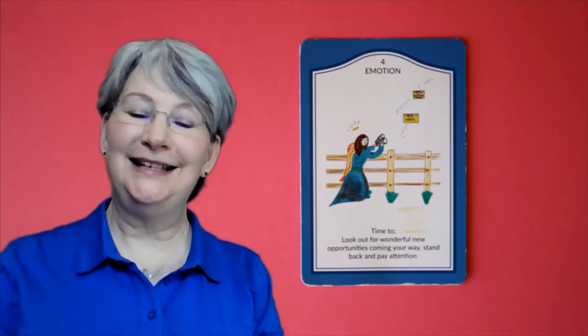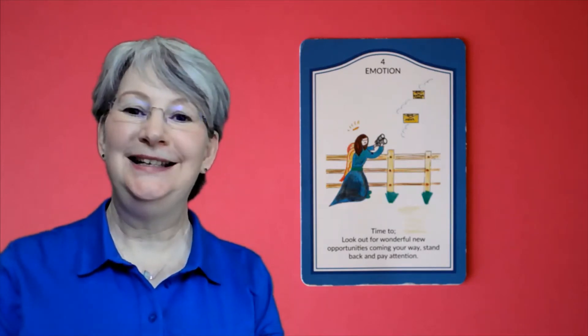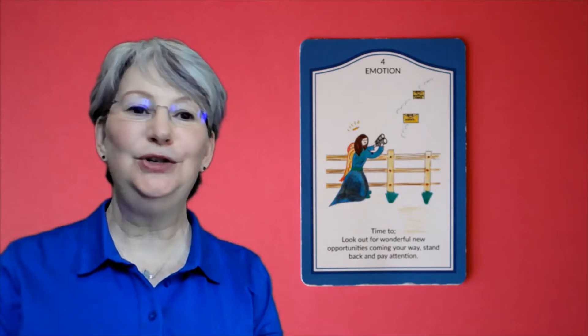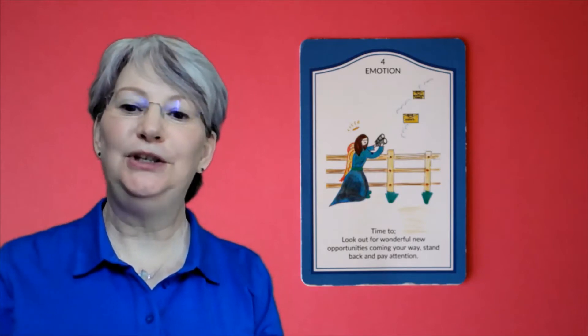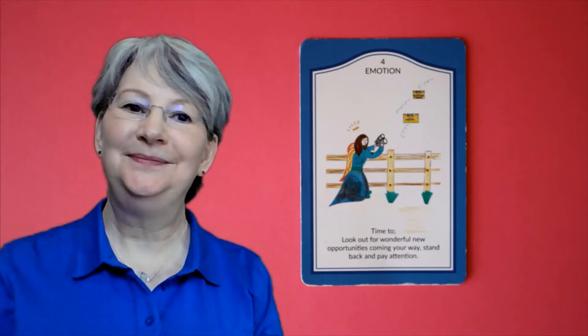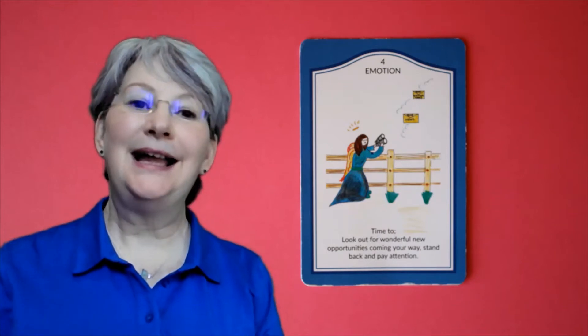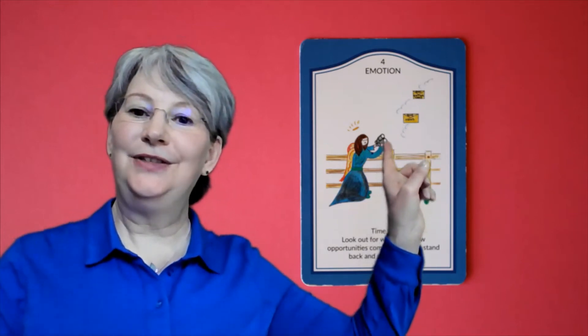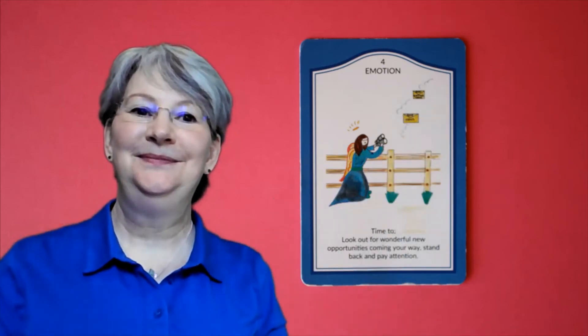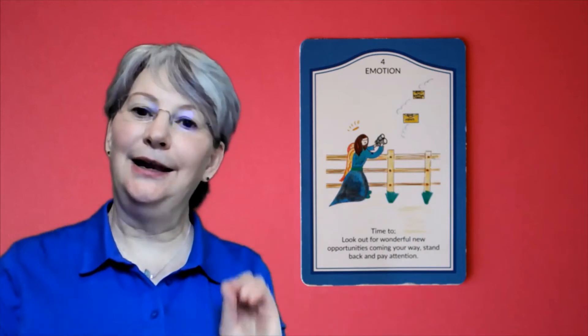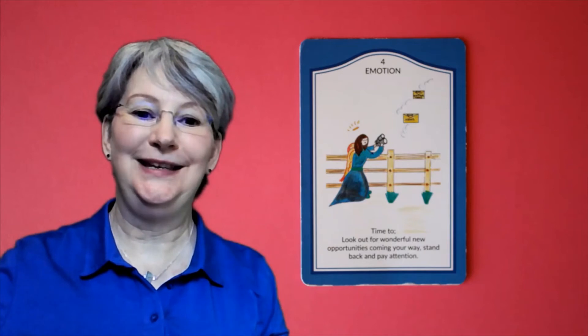Cancer, or Moon Child as we can also know it, we've got the card, the 4 of Emotion. So it's time to look out for wonderful new opportunities coming your way. Stand back and pay attention. Look, the angel has binoculars. She can see these wonderful things coming into her view, but she's standing back and looking at the bigger picture, and that's what you need to do this month.